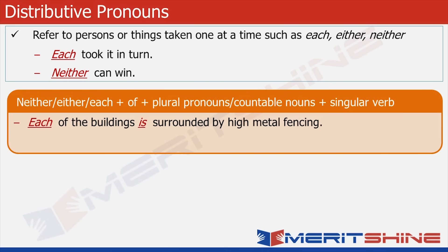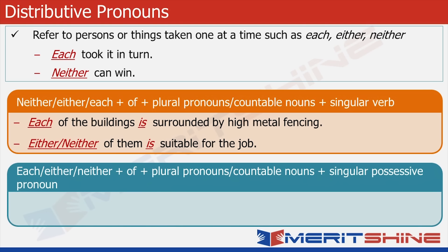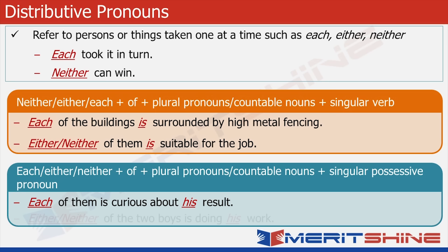Each of the buildings is surrounded by high metal fencing. Either/neither of them is suitable for the job. Distributive pronouns neither, either, each are also used along with 'of' before plural pronouns and countable nouns and take singular possessive pronouns. Each of them is curious about his result. Either/neither of the two boys is doing his work.